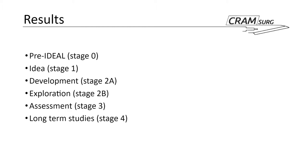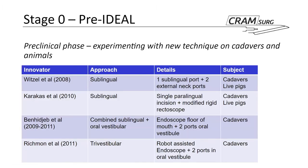The IDEAL framework consists of about five stages if we count stage zero. The article is subdivided into these stages: the pre-IDEAL stage, idea, development, exploration, assessment, and long-term studies. We'll briefly talk about what each of them entails.